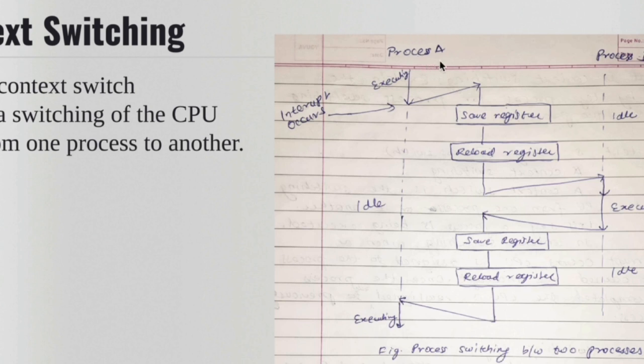Let's say there are two processes, process A and process B. Initially they are in the ready queue. Now let's say that CPU gets assigned to process A and the process A starts executing.